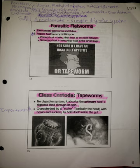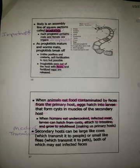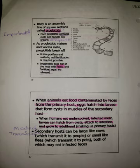Tapeworms absorb the primary host's digested food through their skin. They're characterized by a scolex, which is basically the head — it has hooks and suckers to hold itself inside the gut. The body is an assembly line of square sections called proglottids. Each proglottid contains male and female sex organs. As proglottids mature and worms mate, proglottids break off. Self-fertilization is rare but possible. Proglottids pass out of the host with feces, and fertilized eggs are released. When animals eat food contaminated by feces from the primary host, eggs hatch into larvae that form cysts in muscles of the secondary host.